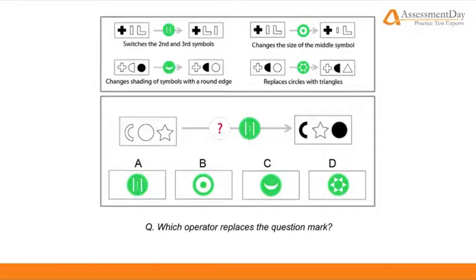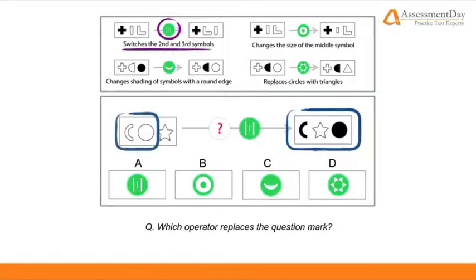The three-line operator states that it switches the second and third symbols. Now we can already see that the star and the circle switch places after the operations, so we need to look for the other operator that turns the white C and white circle into a black C and black circle.